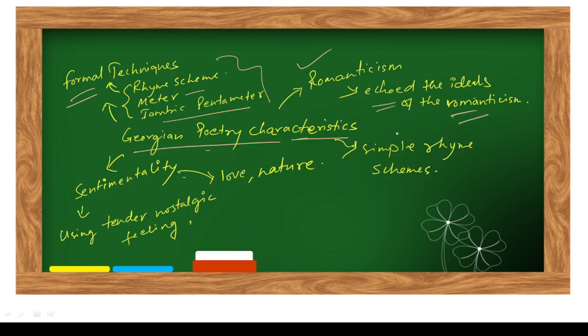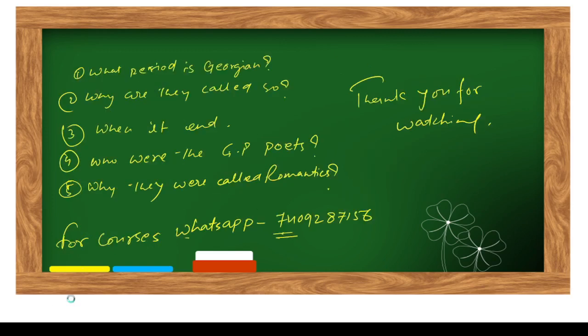They used sentimentality in their work and they used tender, nostalgic feelings in their poetry related to love and nature. That's why you can connect it to romanticism. They used simple rhyme schemes in their poetry. So these are the characteristics.